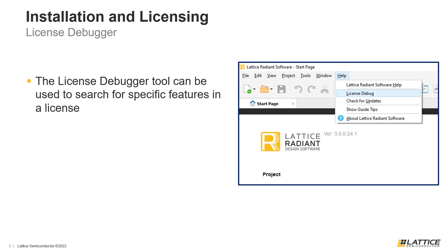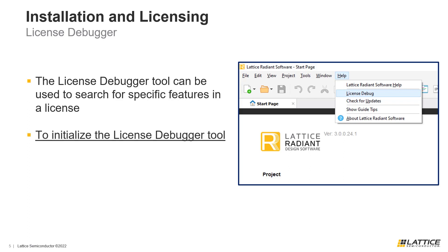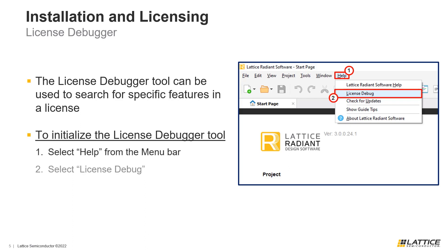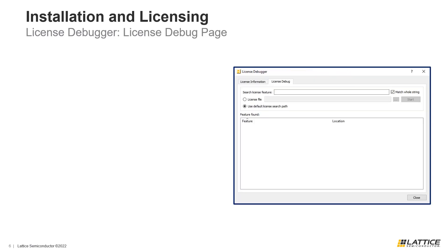One useful feature of Lattice Radiant is its license debugger tool, which can be used to debug a license and search for specific features. To launch the license debugger tool, select Help from Radiant's menu bar, then from the drop-down that appears, select License Debug. This will launch Radiant's license debugging tool.